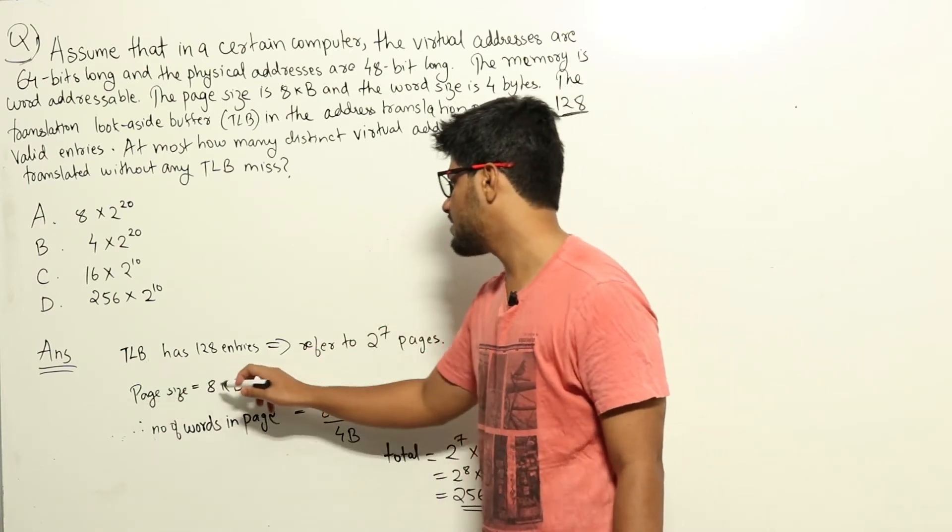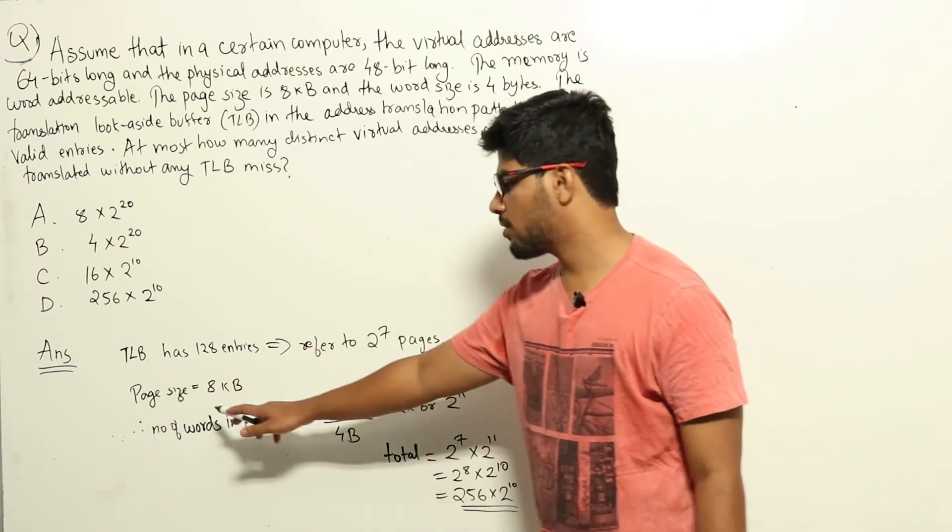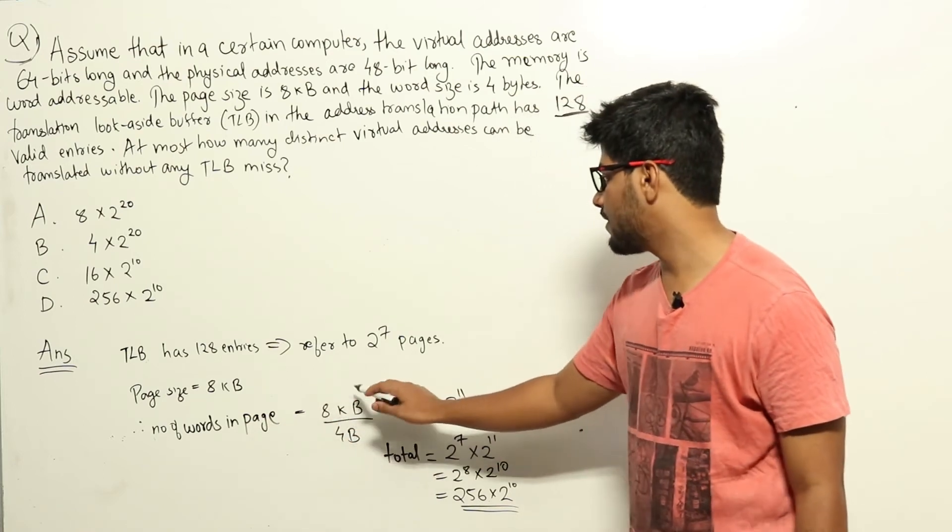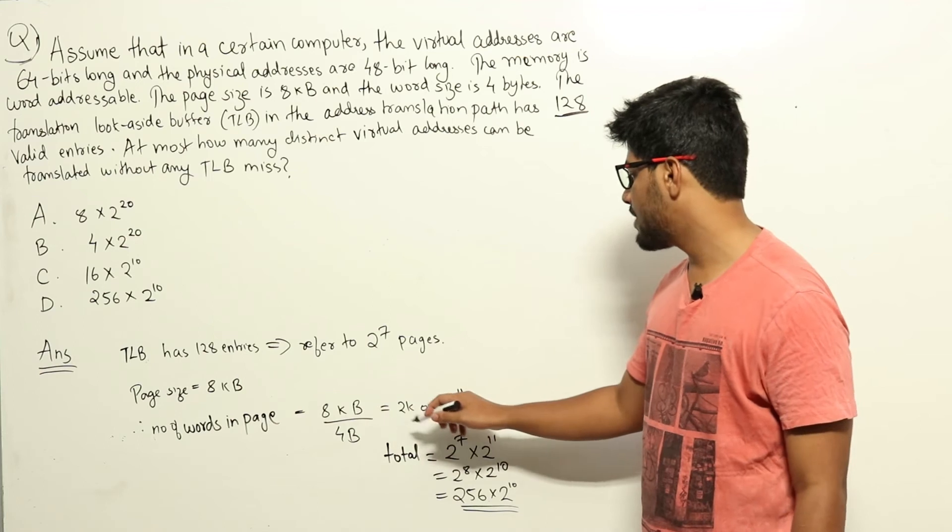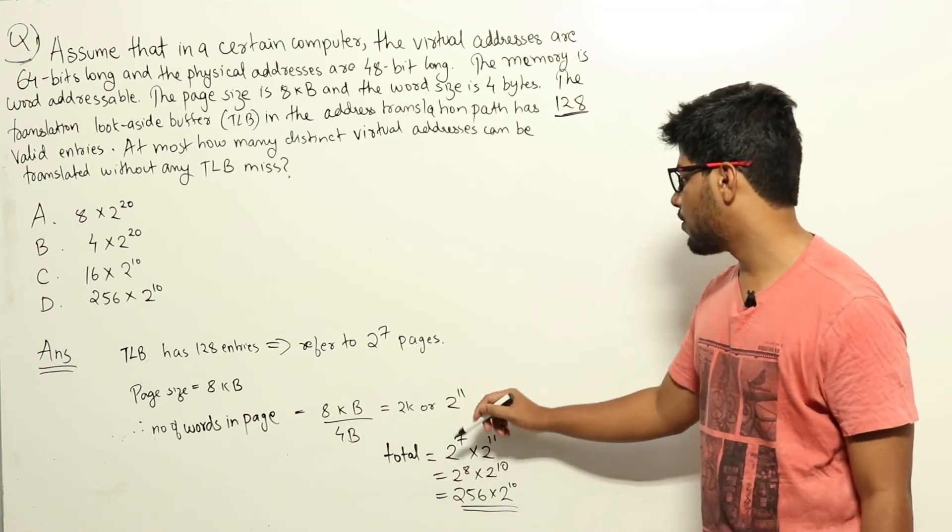Now size of each page is 8 kilobytes. Therefore the number of words in a page will be equal to 8 kilobytes divided by 4 bytes. Word size was 4 bytes. That will be equal to 2k or 2 power 11.